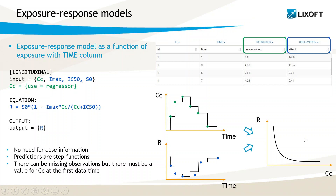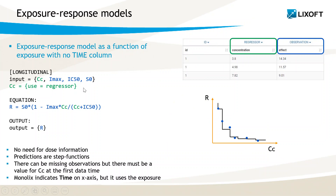In order to have the exposure-response curves directly in the plots of Monolix, the time should not be used in the data, so this column should be either ignored or removed. In that case, the same structural model with CC as the regressor should be used, but since no time is available in the data, Monolix uses the regressor CC also for the x-axis of the plots instead of time. Thus the diagnostic plot shows the response versus the exposure, which is still piecewise constant. Be careful that the plot labels for the x-axis are still called time by default in Monolix, but these labels can be changed in the interface. In particular, the individual fits are individual exposure-response curves.